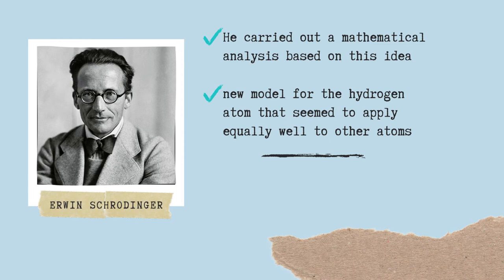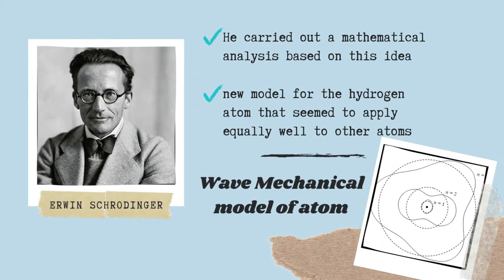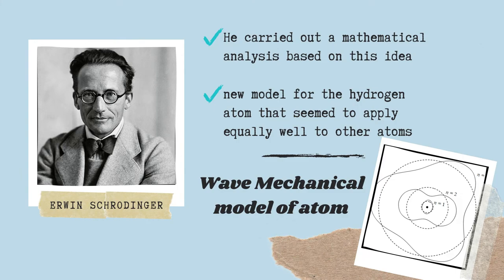Schrodinger carried out a mathematical analysis based on this idea. Then, he found out that it led to a new model for the hydrogen atom that seemed to apply equally well to other atoms, something Bohr's model failed to do. This model is then called as the wave mechanical model of atom.